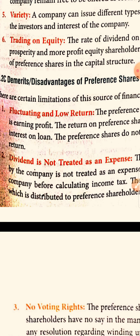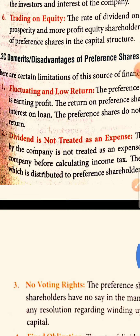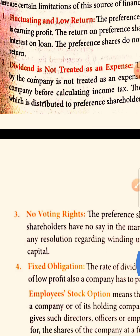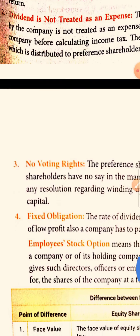Because the dividend is not treated as an expense, your profit will be high. If your profit is high, you have to pay more income tax. So this is a big demerit — you are paying dividend to preference shareholders but cannot treat it as an expense, which results in higher income tax paid to the government.